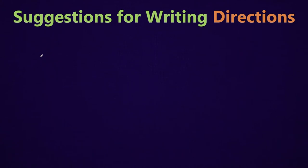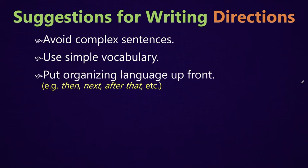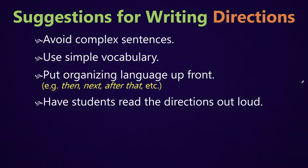Now, a special form of reading is directions. Language learners often have difficulty with directions because they're written in a confusing way. There are things teachers can do to make directions more user-friendly. Try to avoid complex sentences — use short, direct sentences and simple vocabulary. Imagine you're giving these directions to a grade schooler. Try to put organizing language up front in the directions, like the words 'then,' 'next,' 'after that,' etc., so it's easy to see how the next step relates to the previous step. If a student is having difficulty understanding directions, try to have them read the directions out loud. Sometimes, especially for language learners who've learned English through conversation, hearing it read out loud will make it click.